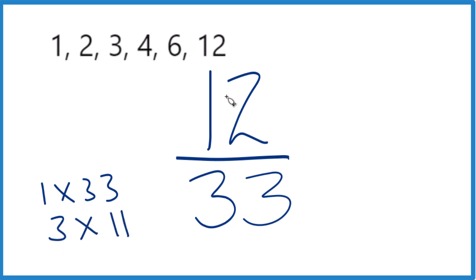So now when we look at this, we're looking for the greatest common factor. 33? No. 11? No. Three? Yes. Three's here and here. That's our greatest common factor.